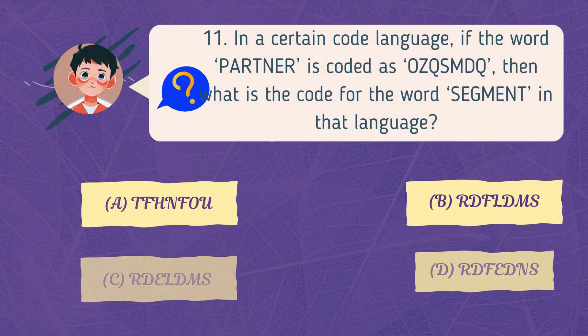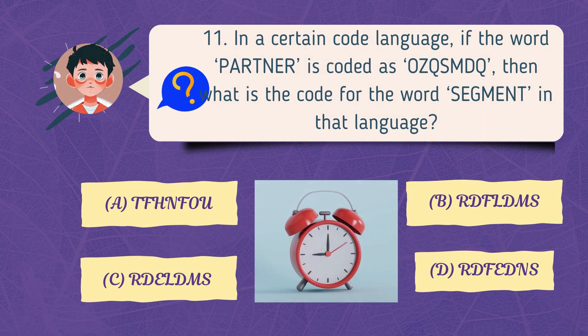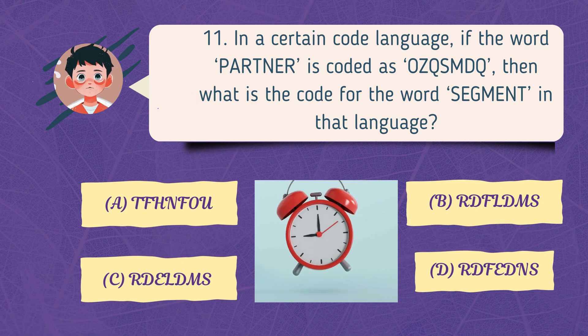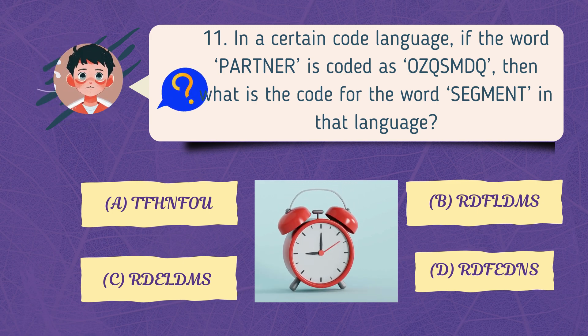In a certain code language, if the word partner is coded as OZQSMDQ, then what is the code for the word segment in that language?